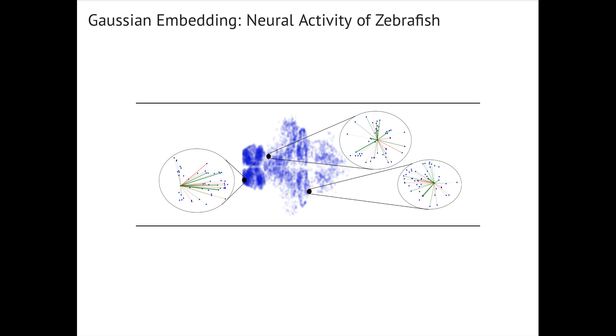Here, we zoom in on three neurons and their neighbors. Using the fitted embeddings, we can hypothesize about their functional connectivity.